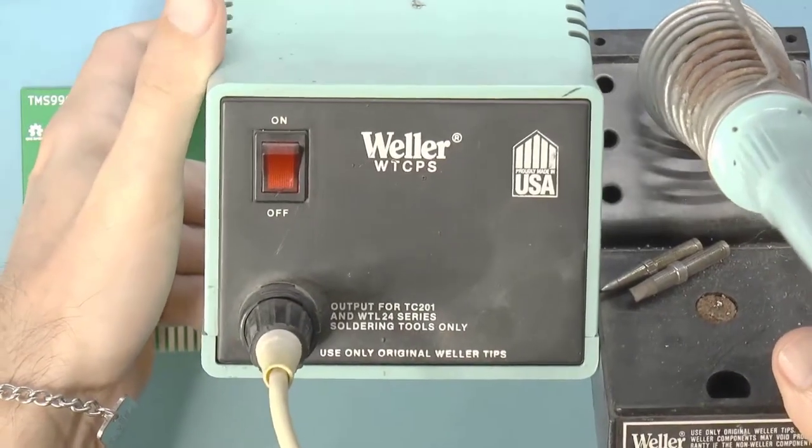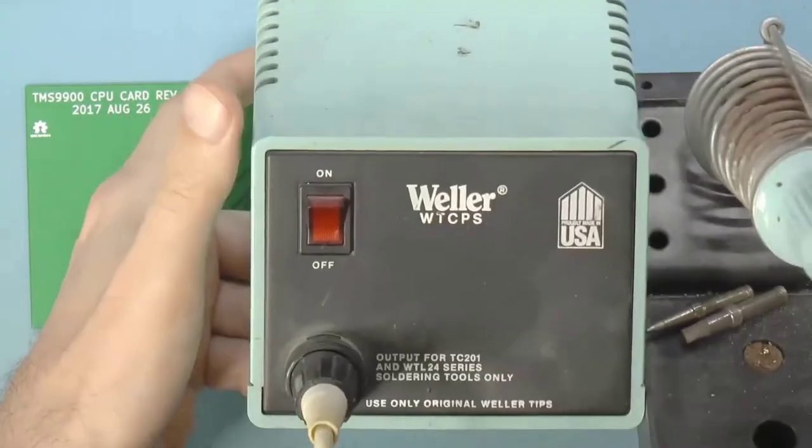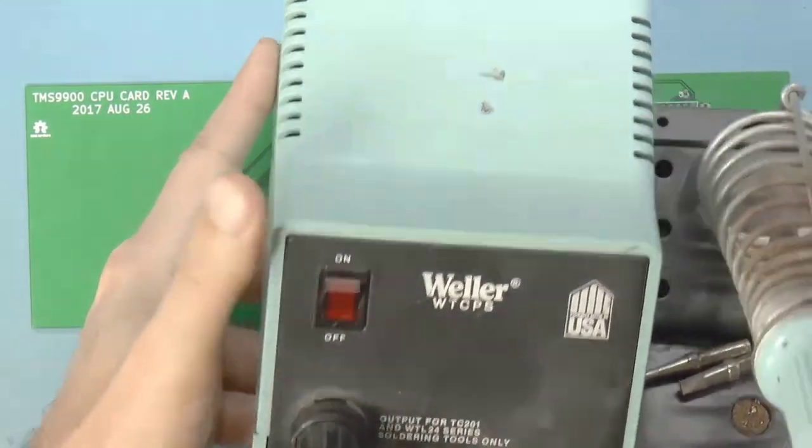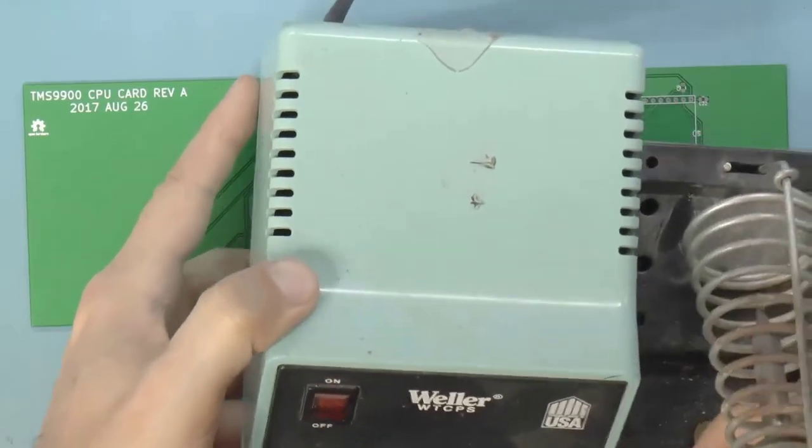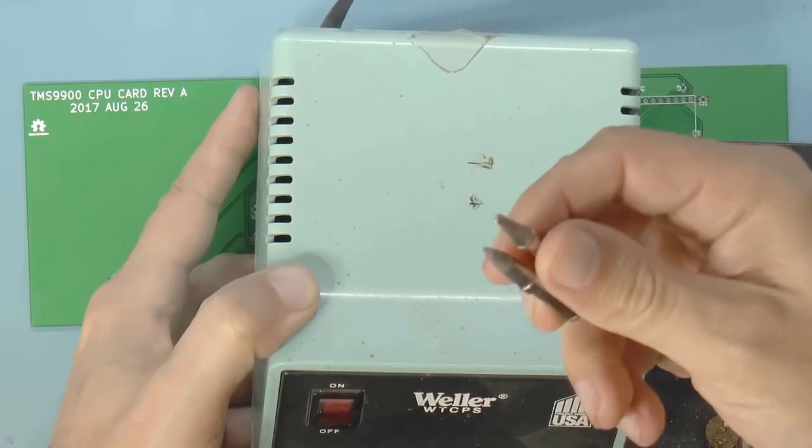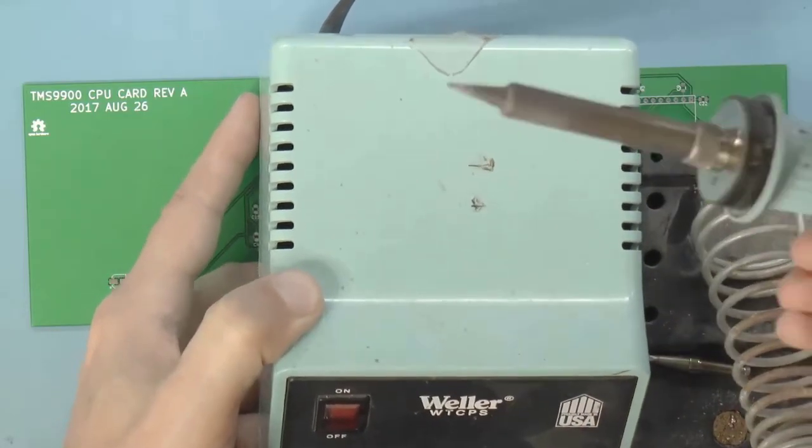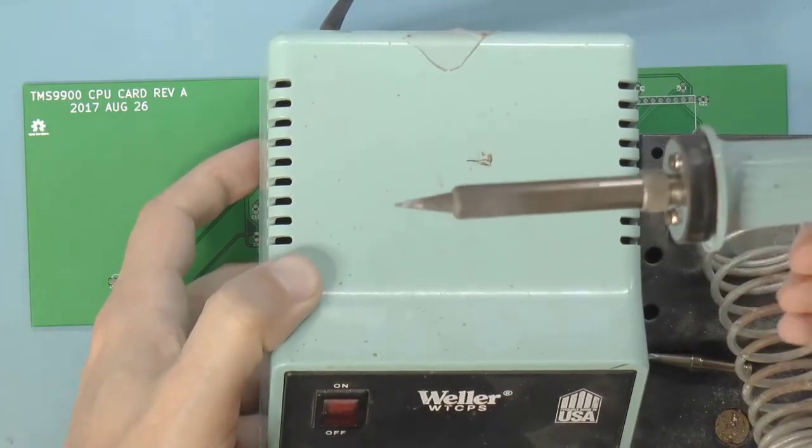Now this is my soldering iron, it's a Weller WTCPS. It's basically temperature controlled but you don't get to set the temperature. It's got replaceable tips - here are some other tips that I have, one is a chisel tip and one is a slightly thinner chisel tip, but I usually stick with the nice thin pencil tip because I do a lot of surface mount.